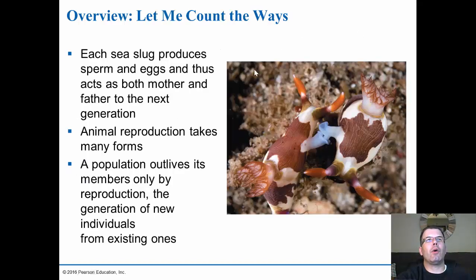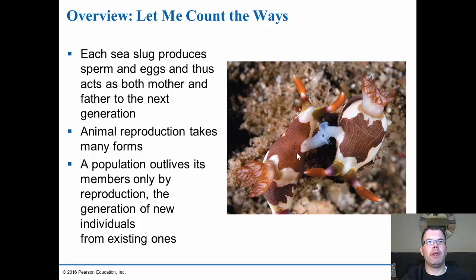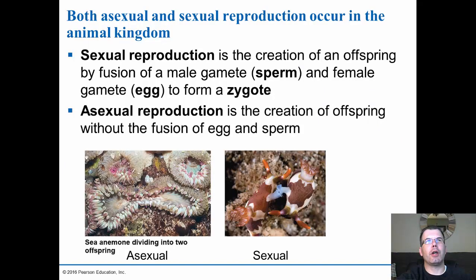Sea slugs produce both sperm and eggs, acting as both mother and father. We call this hermaphroditism — having both male and female organs. The benefit is that you don't have to search for the opposite sex; any two sea slugs can mate. One becomes the male for one animal, one becomes the female for the other, and vice versa. The idea of why we reproduce is so that the population will outlive its members — to be biologically successful, we need to pass our genes to the next generation.